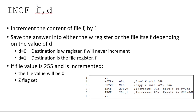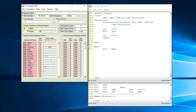The first instruction we are looking at is the increment file instruction. It has two opcodes: F being the file that you want to increment and D being the destination of that increment process. If D is zero, the answer will be written in the W register; if D is one, the answer will be written back into the file itself. If the file is already at 255 and you increment it, the file will roll over to zero and the Z flag will be set.